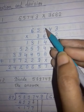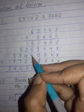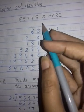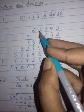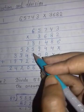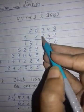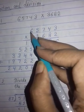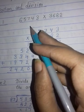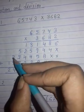6 times 7 is 42, 42 plus 2 is 44. You will write down 4 here, 4 is carry. 6 times 5 is 30, 30 plus 4 is 34. Write down 4, carry is 3. 6 times 6 is 36, add the carry also. 36 plus 3 is 39.